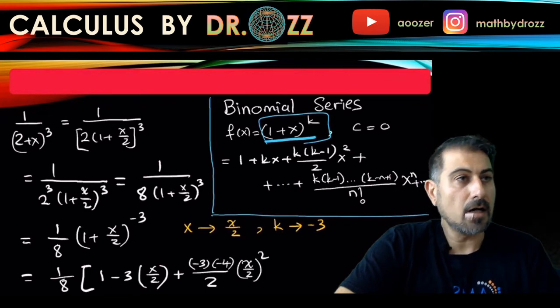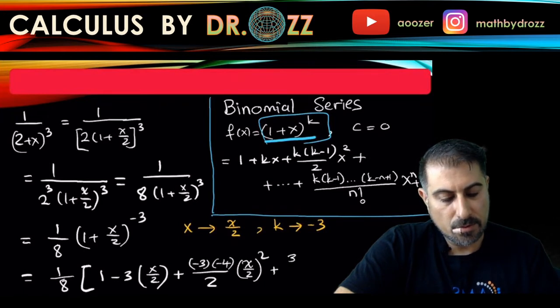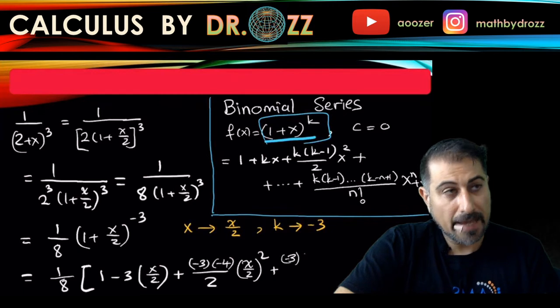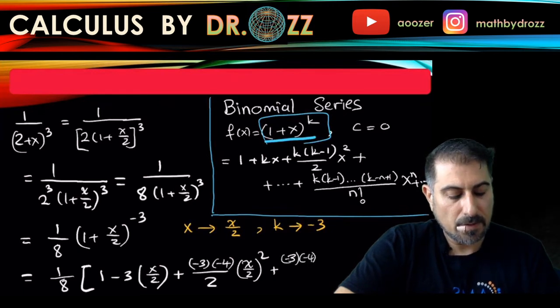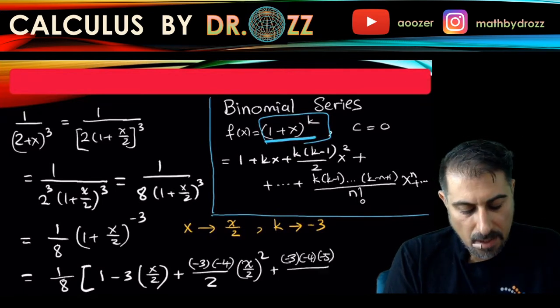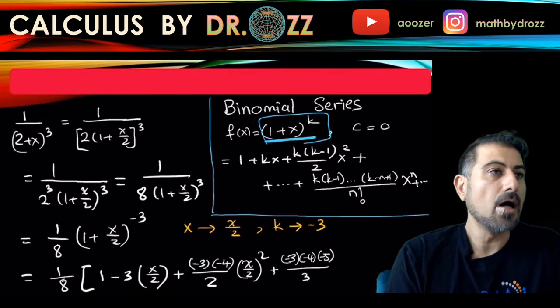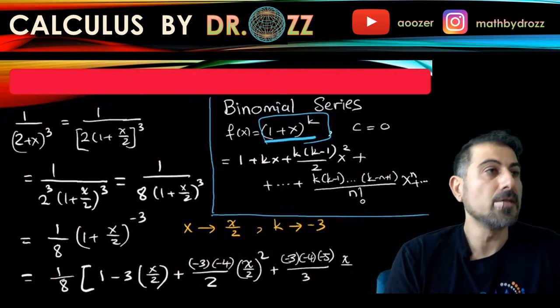And then this goes on and on and on, right? Negative 3, negative 4, negative 5. Let me just write down the next term so you will figure out exactly what the rest should be: (x/2) to the power of 3.